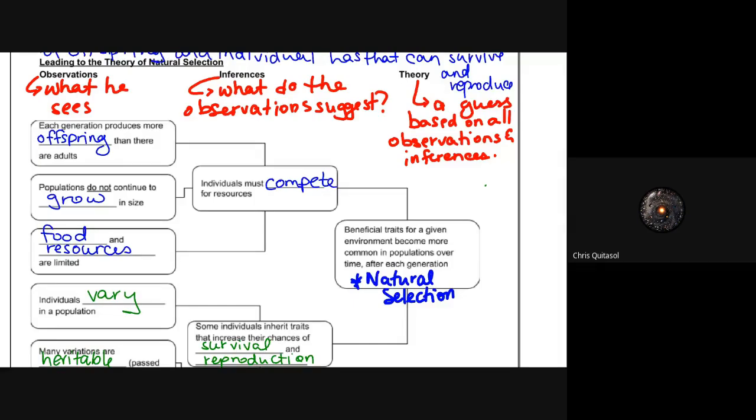That finiteness, the fact that the population does not grow, and that there are way less adults than there are offspring, all led to the inference that individuals have to compete for resources. This is the first major inference that Darwin was able to make based on what he saw in the Galapagos—that there was this competition going on between species and within species to survive.